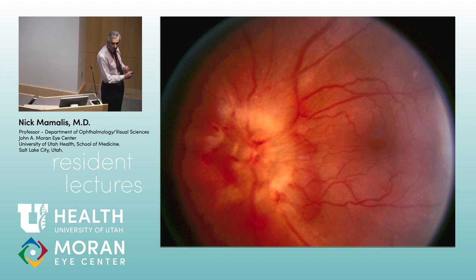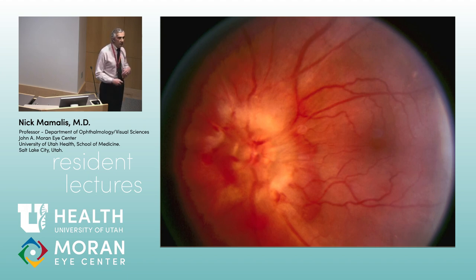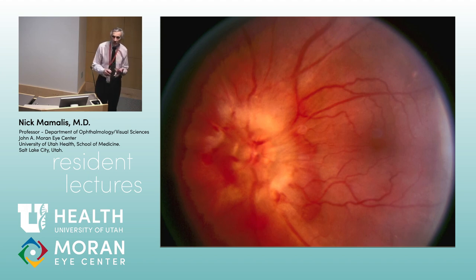In this severe case you can see what almost looks like papilledema, some ischemia, tortuosity of vessels, and hemorrhages. In a severe hypertensive crisis you can even get swelling of the optic nerves.